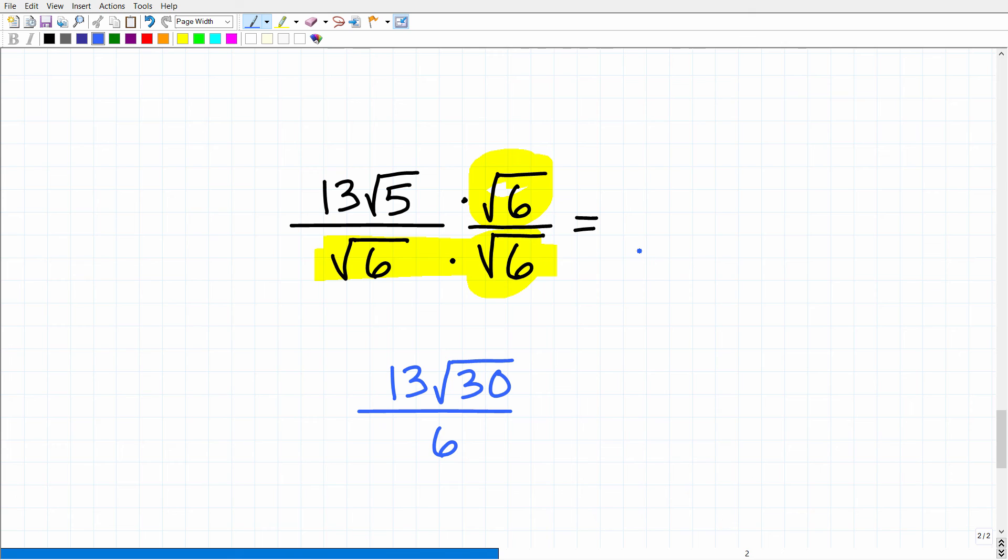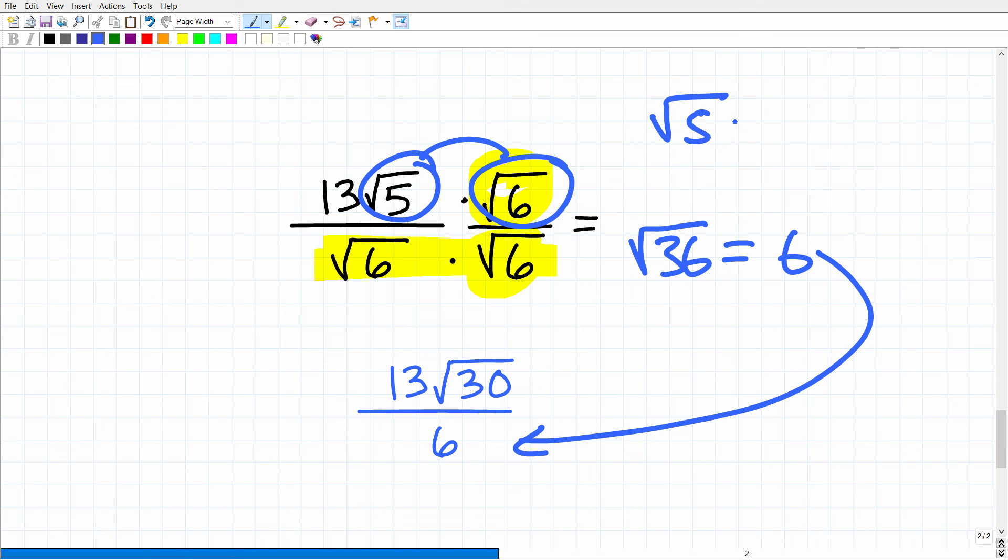All right, so the square root of 6 times the square root of 6 will be the square root of 36, which, of course, is 6. That is our denominator. And then 13 times the square root of 5 times the square root of 6. We're simply going to multiply the square root of 5 times 6 under one radical, which, of course, is 13. So we have 13 times the square root of 30 over 6. Now, of course, if 6 can go into 13, we would simplify even further, but it cannot. So this is the final answer.